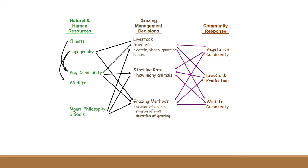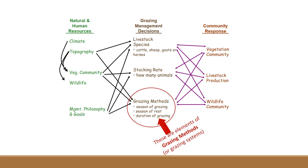As a range manager you have a certain set of natural and human resources. The actual decisions you can make in terms of grazing management include the livestock species, the number of animals — stocking rate, which we discussed previously — and then this grazing methods concept. The grazing method is something that controls season of grazing, season of rest, and the duration of grazing. Those are the elements of a grazing method or grazing system.